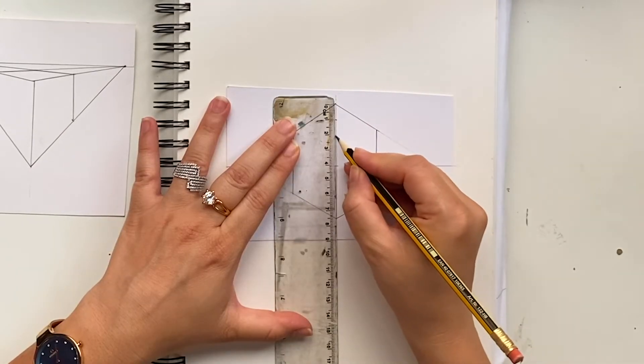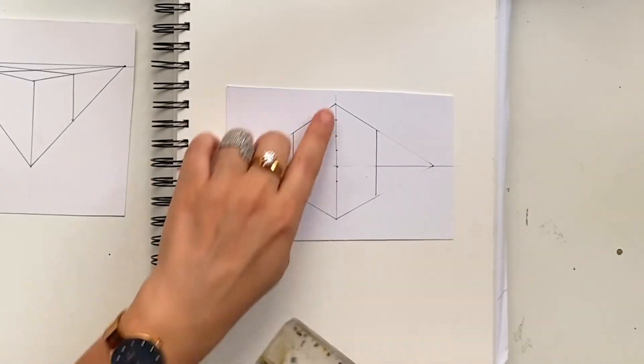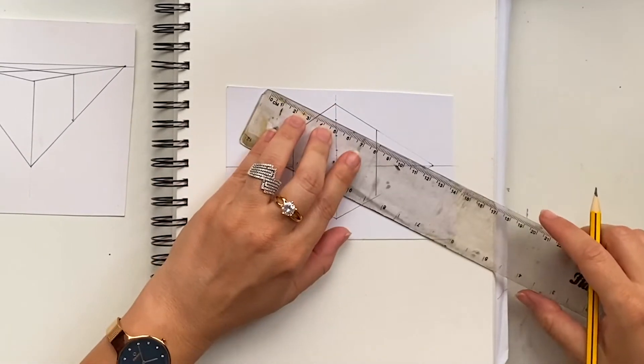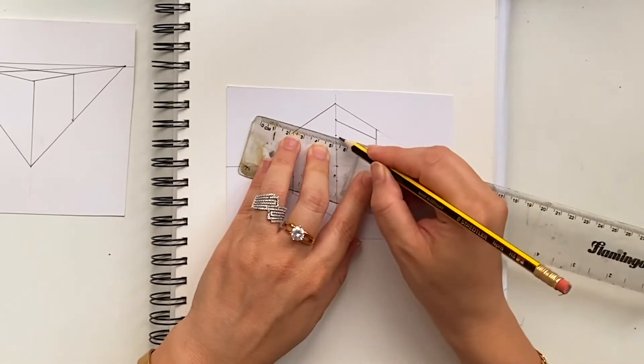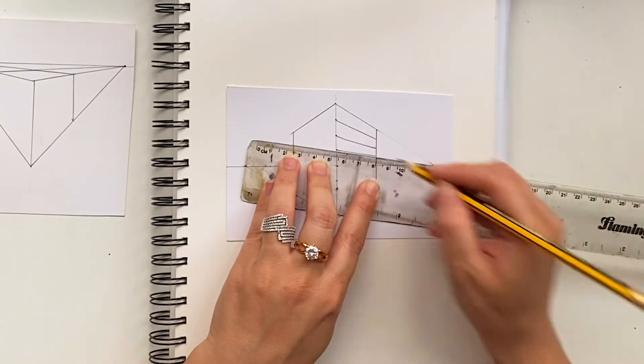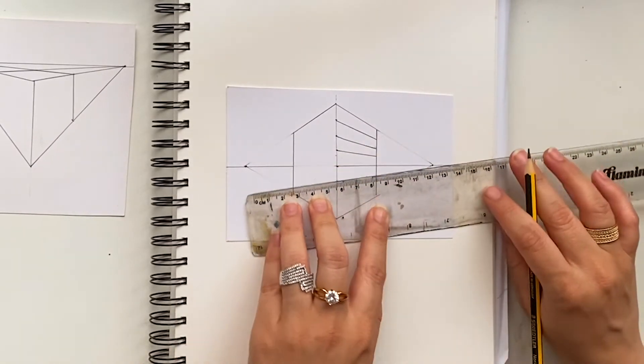At the end, you can erase the extra construction lines. Put some dots in the center of the vertical line. Then to add more details on the building, you need to aim to the vanishing point by keeping your ruler on the dots.